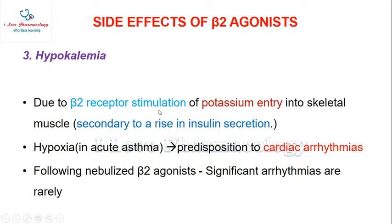Hypokalemia is caused mainly by beta-2 receptor stimulation promoting potassium entry into skeletal muscle. As potassium enters the skeletal muscle, its concentration in the blood decreases, causing hypokalemia. This potassium uptake into skeletal muscle is secondary to a rise in insulin secretion.